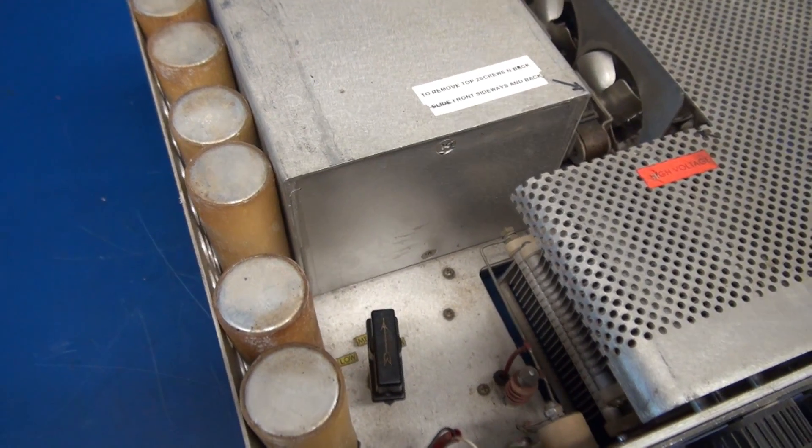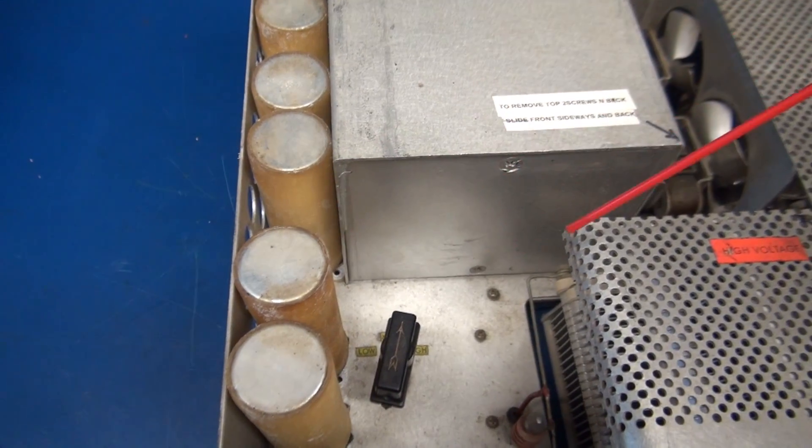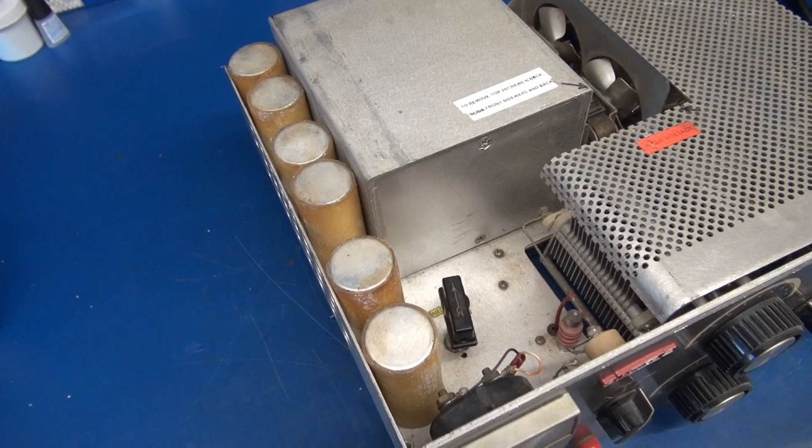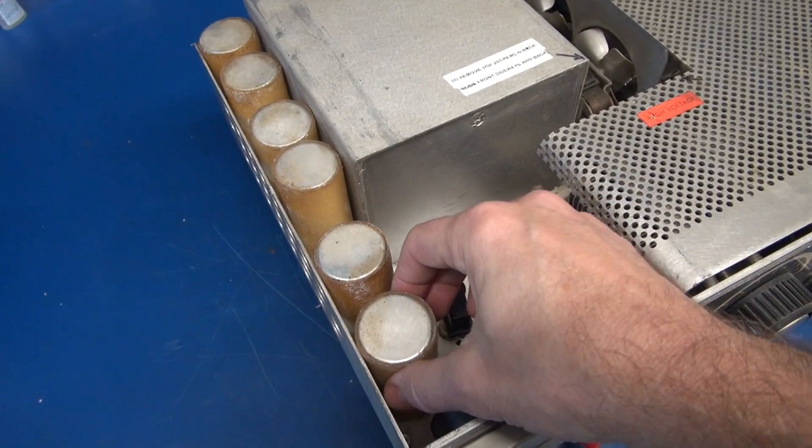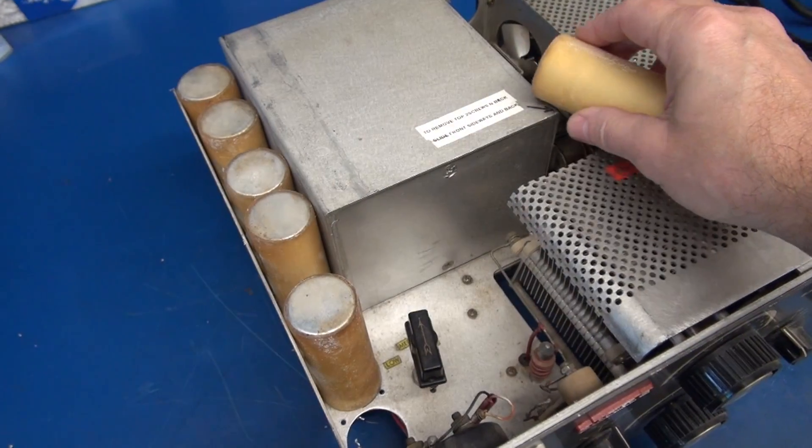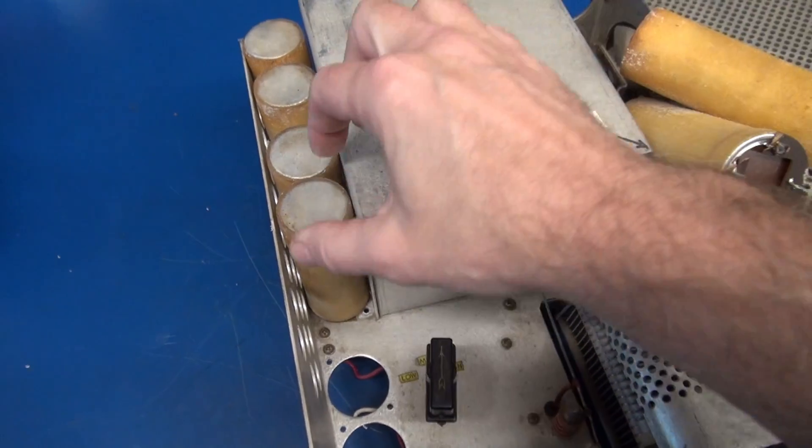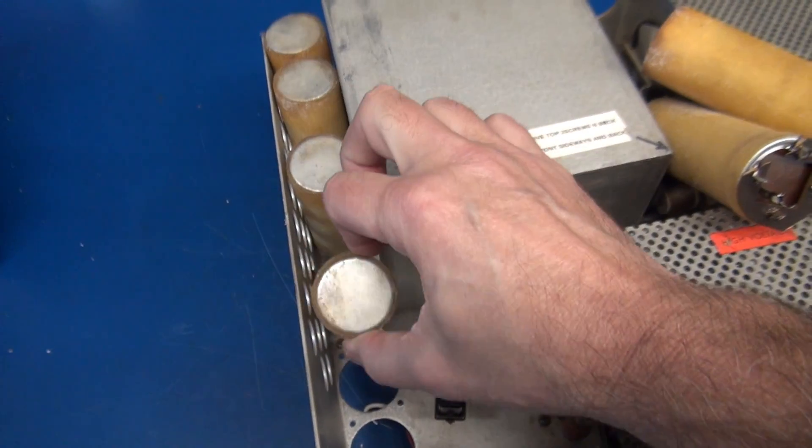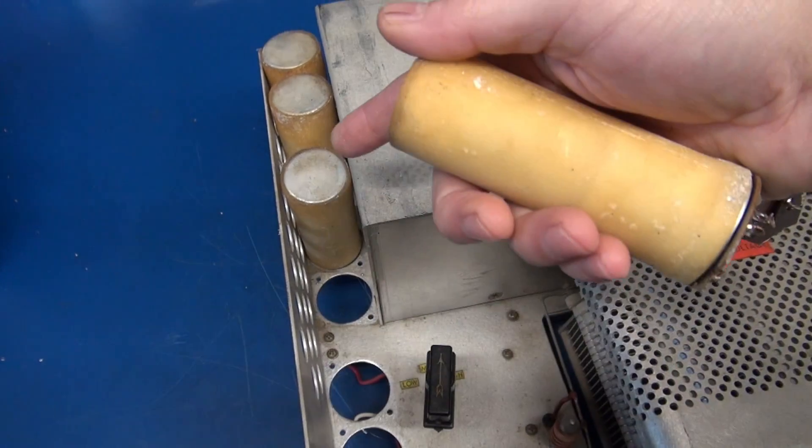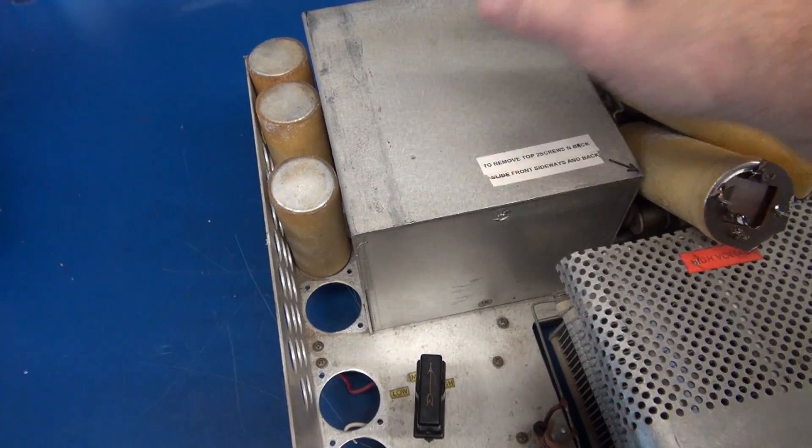In other models of this amplifier, they had the six caps arranged here. So what the challenge is, is locating these original type filter caps and if you use something different you have to ensure they'll fit into the slot down the side of the amplifier.